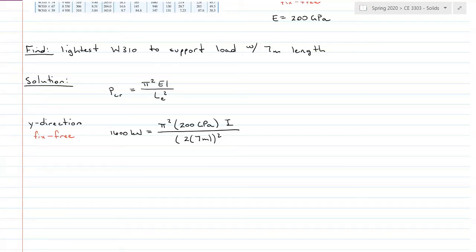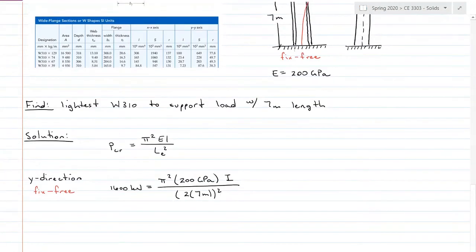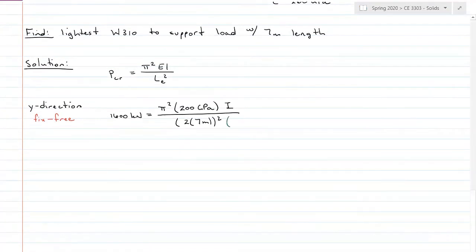Gigapascal is 1 kilonewton per millimeter squared. So I'm going to convert my length to millimeters because you see here all of my inertias are in millimeters to the fourth. So I'm going to multiply you by 1,000 millimeters per meter and square that because I have square meters in my denominator. And solving for inertia, I get an inertia value of 158.8 times 10⁶ millimeters to the fourth.